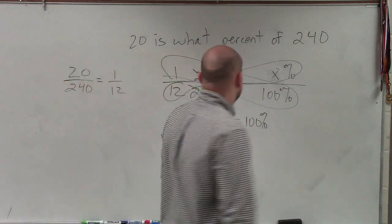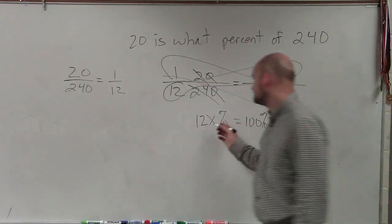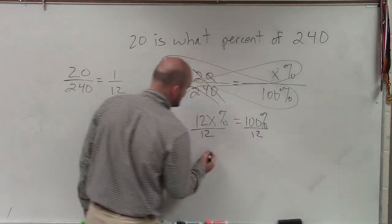That's basically it. So therefore, I need to multiply 12 times the x and the 1 times 100. So now I just need to divide 12 on both sides.